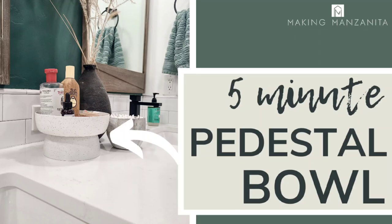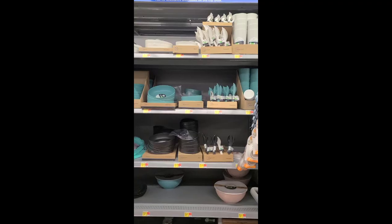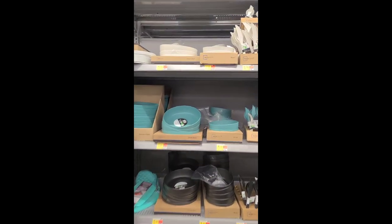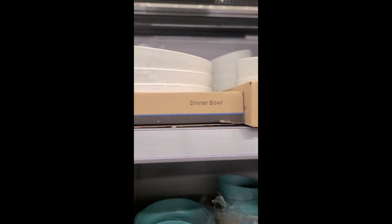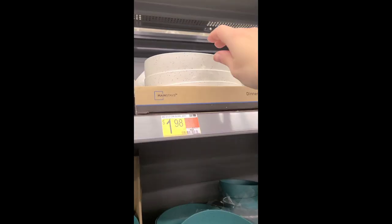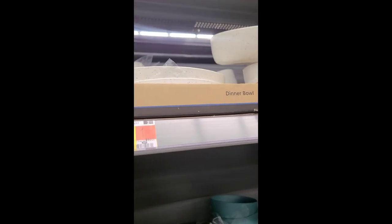Hey guys, Chelsea here from Making Manzanita, and today I'm going to teach you how to make this DIY pedestal bowl in just five minutes for less than five dollars. I got my two bowls from Walmart and they were $1.98 each. They are plastic, and the bigger one they call a dinner bowl and the regular one is just a bowl.